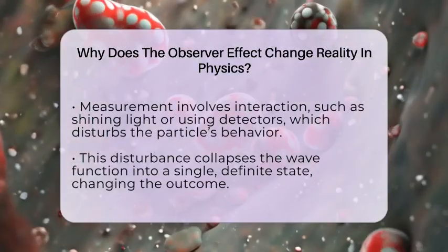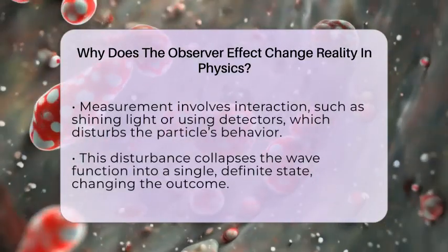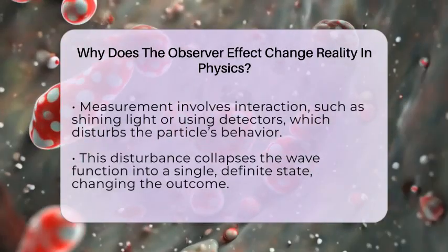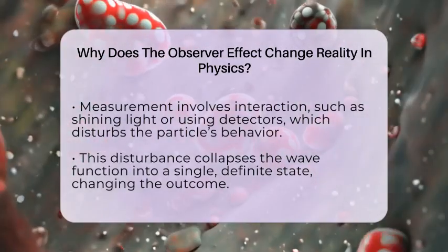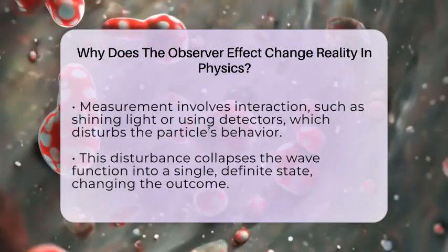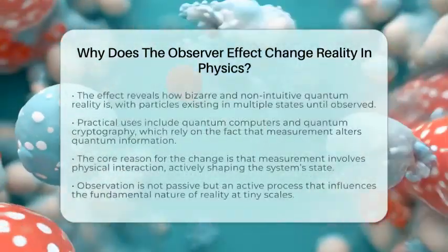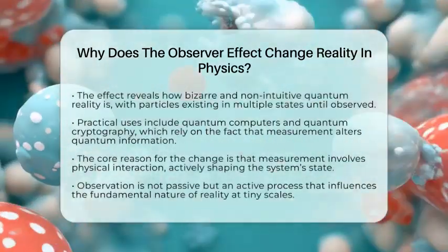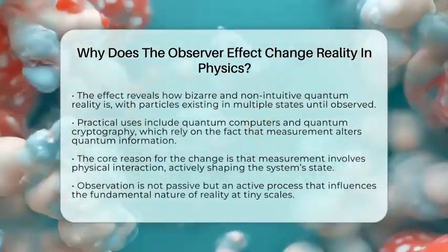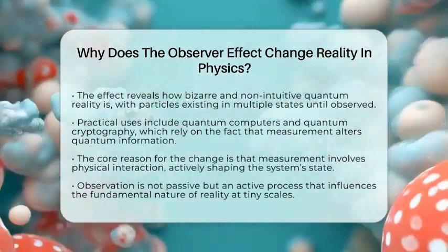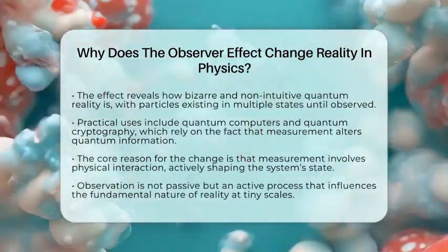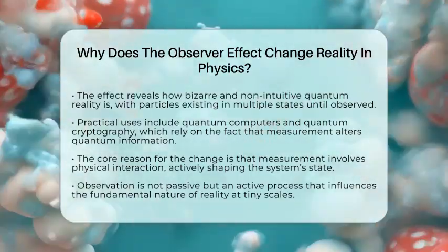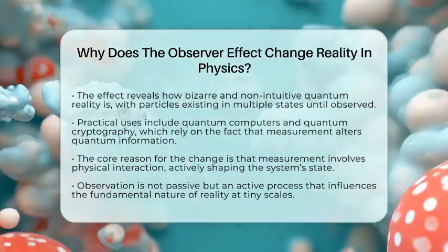This quirky behavior reveals how bizarre the universe really is at the quantum level. Particles can be waves and particles at the same time, exist in multiple places, and only settle into a definite state when observed. It's a strange reminder that reality isn't fixed until we look at it. Scientists are using this effect in practical ways too. Quantum computers rely on controlling these quantum states, and quantum cryptography uses the fact that measuring quantum information changes it, making it impossible for eavesdroppers to spy without detection.